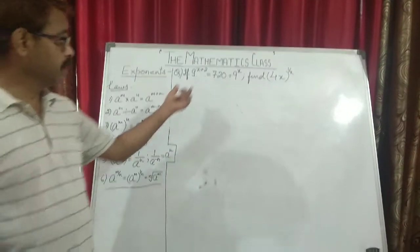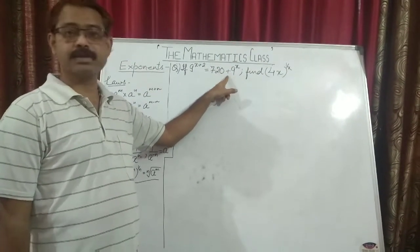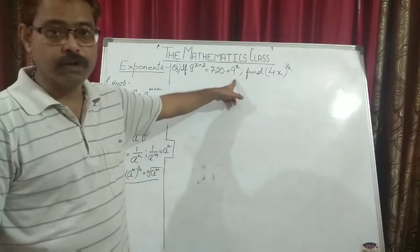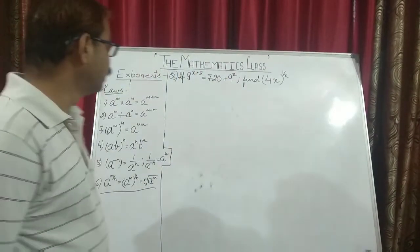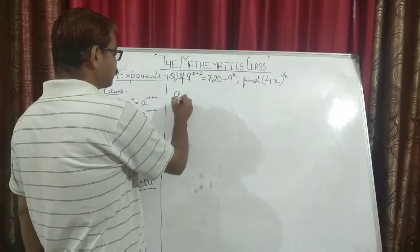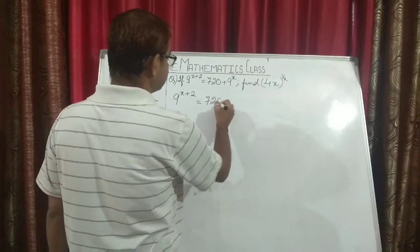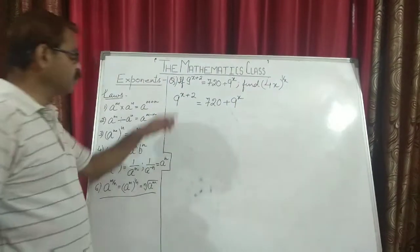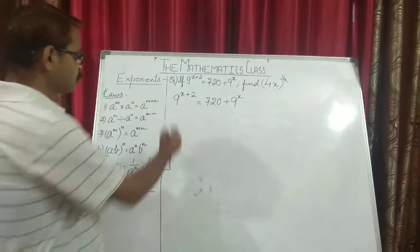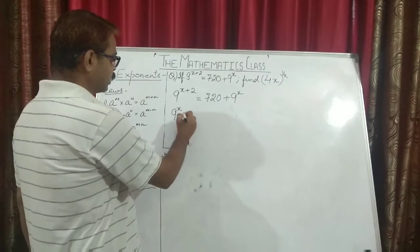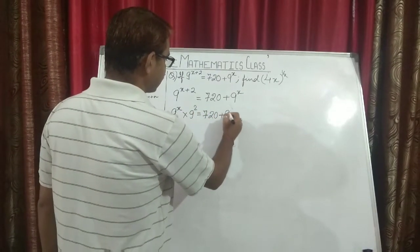The next question: if 9 to the power (x plus 2) equals 720 plus 9 to the power x, find the value of (4x) to the power (1 upon x). Since the powers are added it means the bases are the same and we can separate them as a product: 9 to the power x times 9 to the power 2 equals 720 plus 9 to the power x.